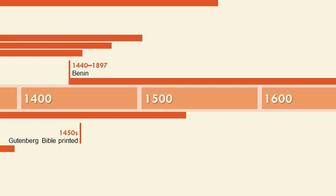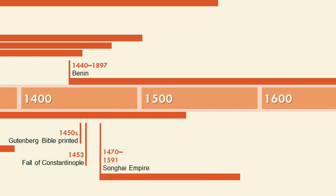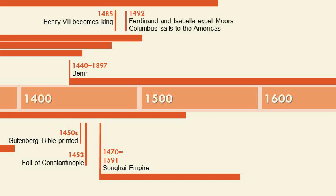Benin will be another non-European phenomenon. The Gutenberg Bible printed — that's going to lead to the whole flourishing of literacy and rapid communication in the west. The Fall of Constantinople is going to be a big event in the eastern empire — essentially the end of the Eastern Roman Empire and the rise of the Ottoman Empire. Songhai is another African empire. Henry the Seventh leads of course to Henry the Eighth and the monumental changes that will happen in England.